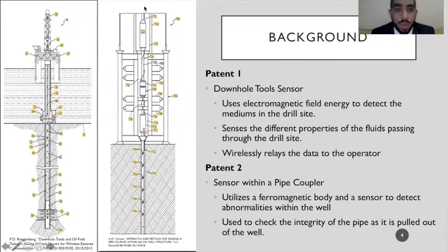For the background, there are two patents, one on the left and one on the right. The one on the left is the downhole tool sensor. This patent uses electromagnetic field energy to detect the medium in the drill site and senses the different properties of the fluid passing through the drill site, like what we are using for our sensor. It also wirelessly relays the data to the operator. This patent is different than our sensor because it's been used in a well, but ours is used in a FRAC-STACK.